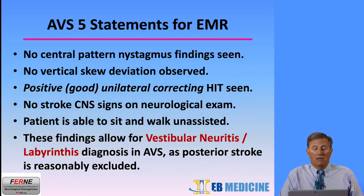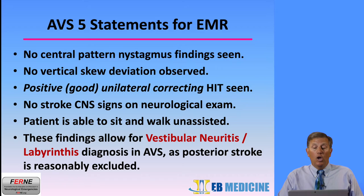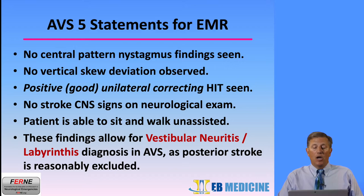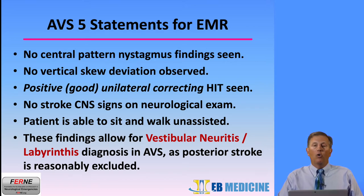So, our five statements: No central pattern nystagmus findings are seen. No vertical skew deviation is observed. A positive — which is good — unilateral corrective HINTS exam is seen, which suggests peripheral etiology. There are no stroke CNS signs on neurological exam, and the patient is able to sit and walk unassisted. These findings allow the diagnosis of vestibular neuritis or labyrinthitis to be made in this patient with acute vestibular syndrome, as posterior stroke is reasonably excluded.